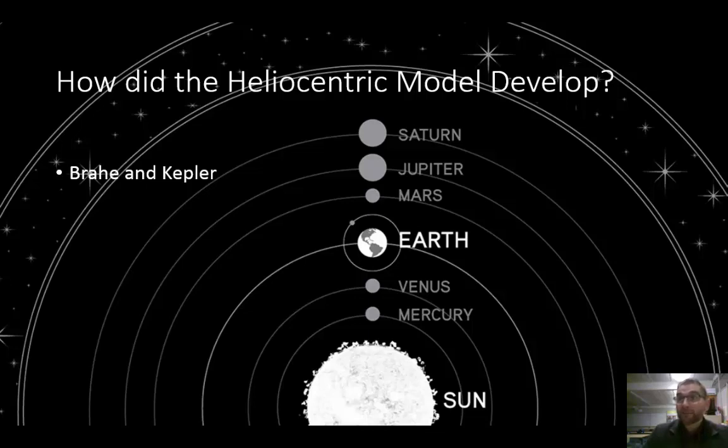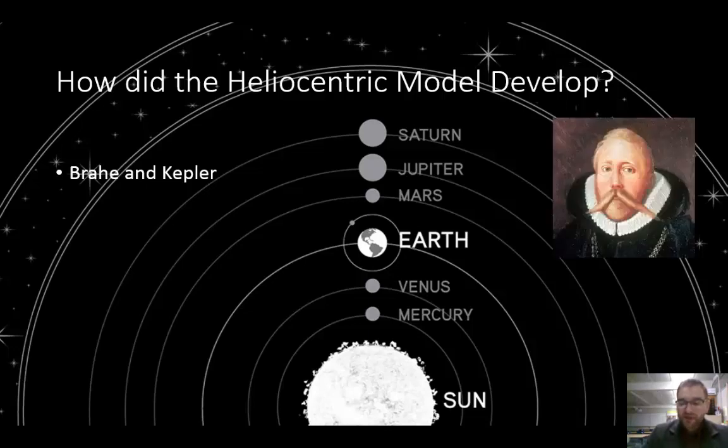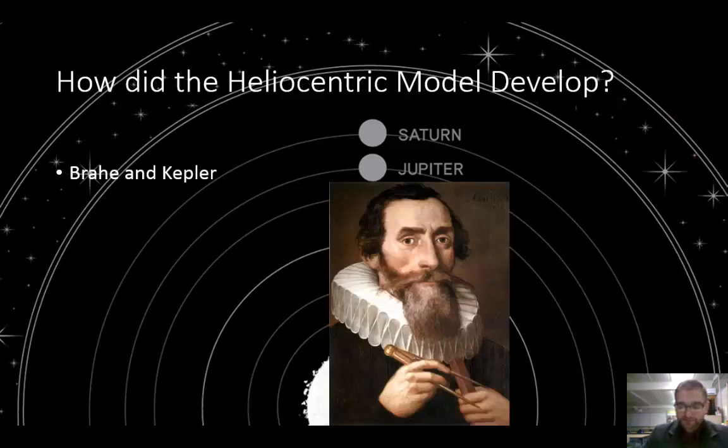Later came Brahe and Kepler. Ptolemy and Copernicus both assumed that the planets moved in perfect circles. Their models fit existing observations fairly well. But in the late 1500s, the Dutch astronomer Tycho Brahe made much more accurate observations. This is a picture of Brahe. Brahe's assistant, Johannes Kepler, used the observations to figure out the shape of the planet's orbits. When he used circular orbits, his calculations did not fit the observations. So after years of detailed calculations, Kepler found that the orbit of each planet is not a perfect circle, but rather an ellipse. An ellipse is an oval shape.